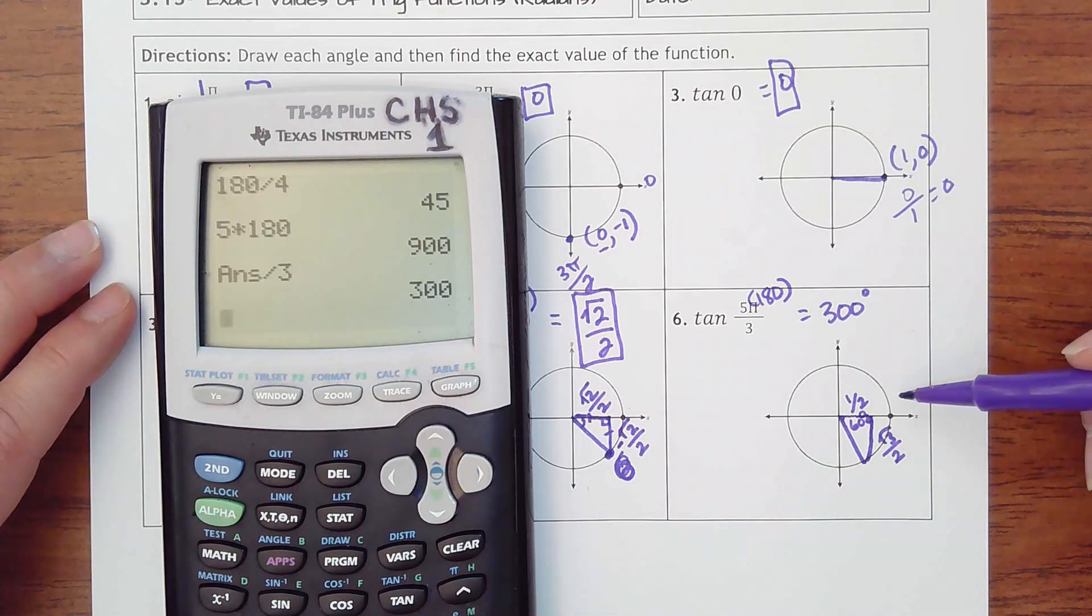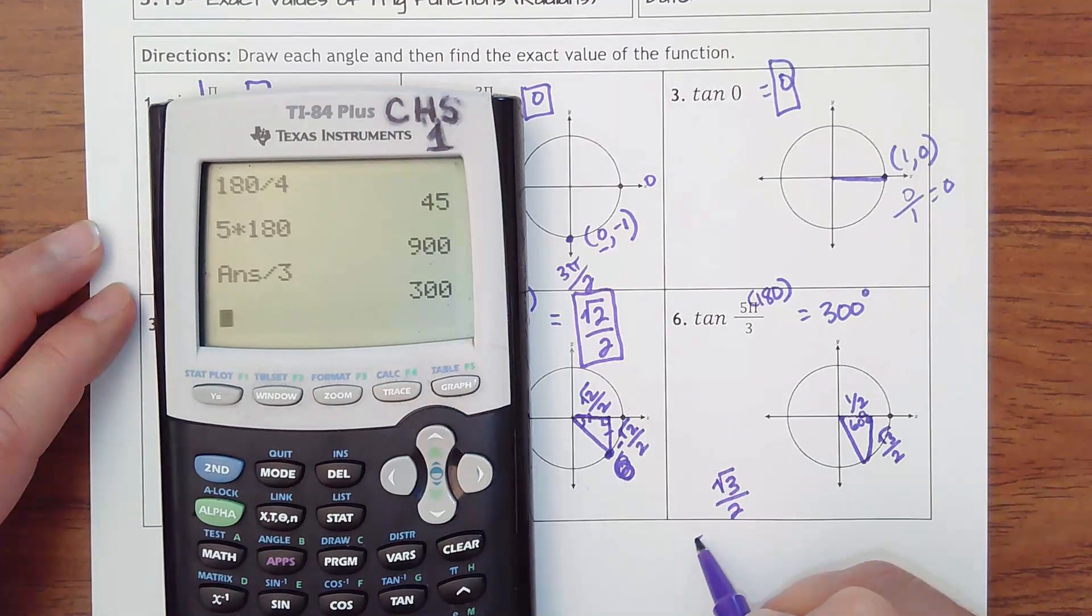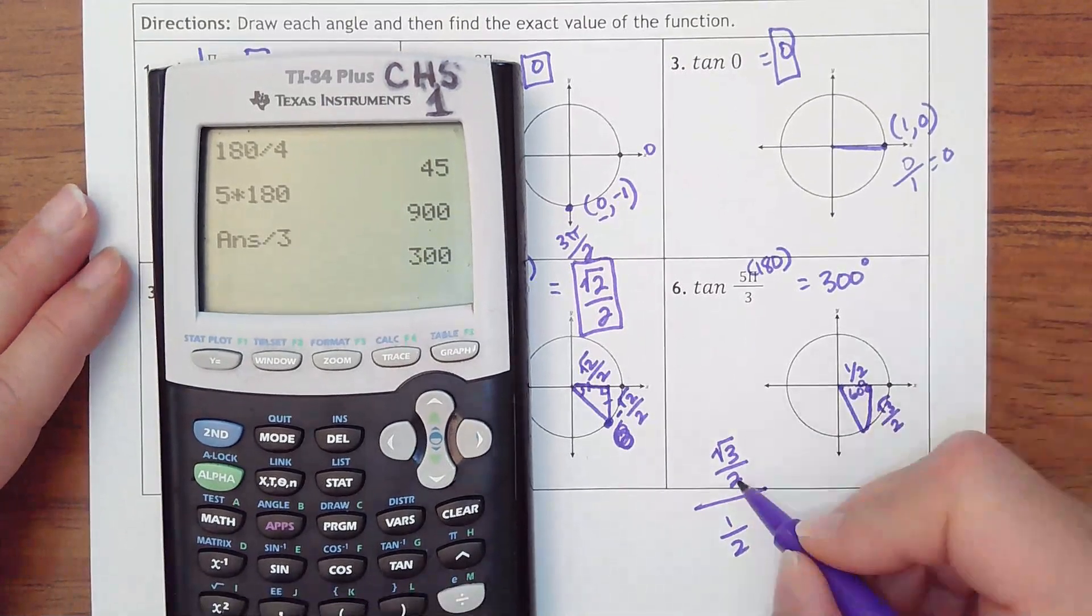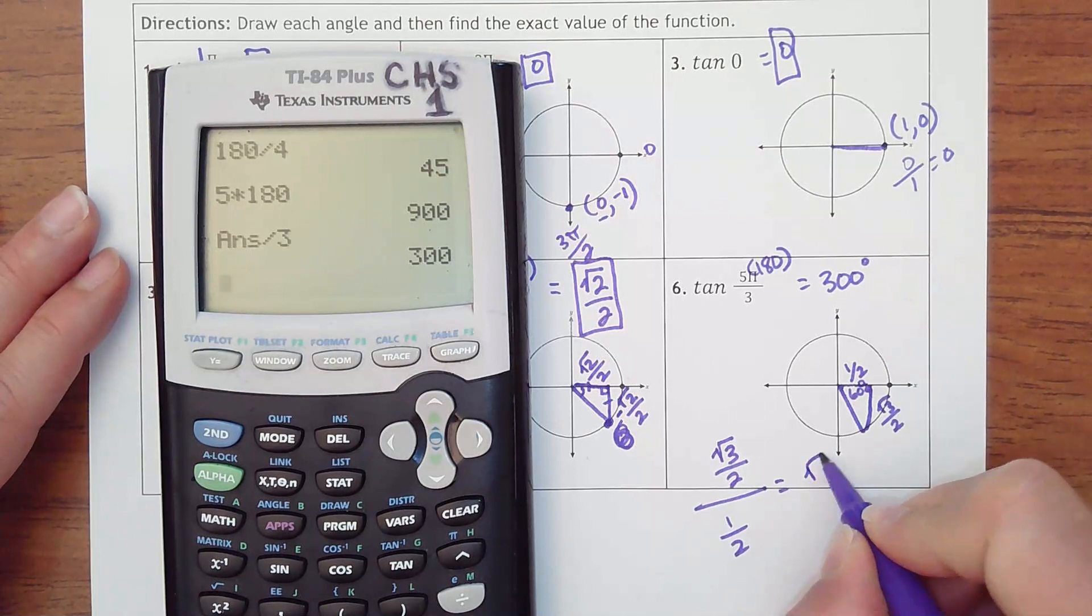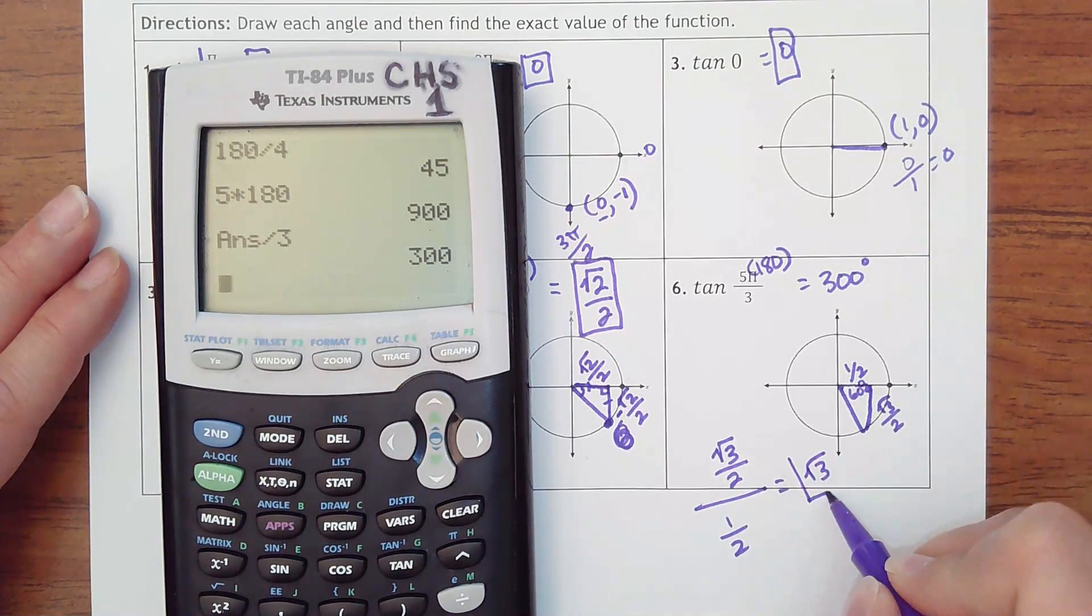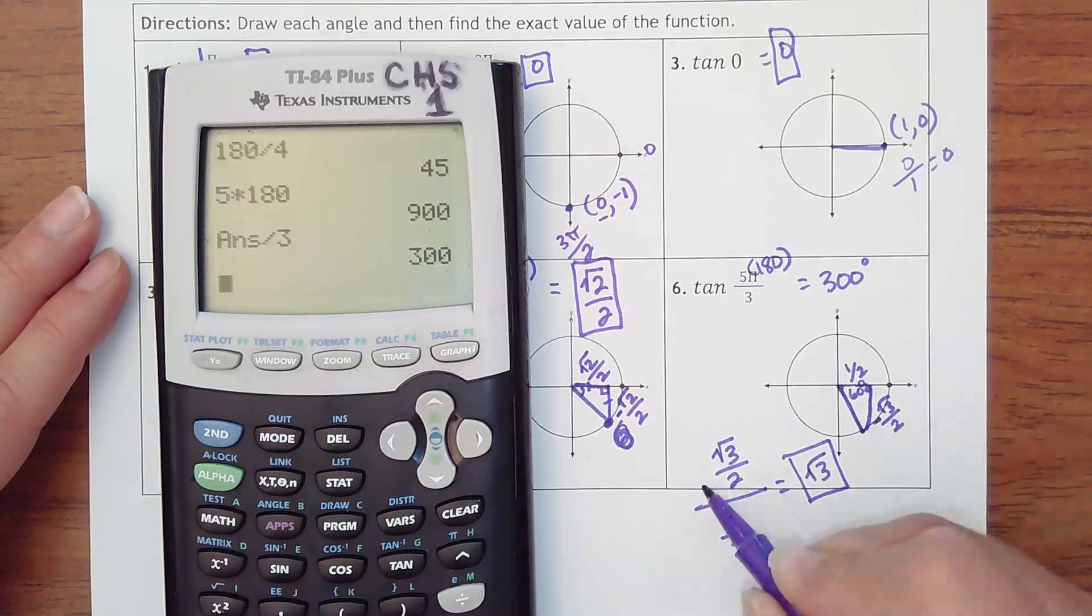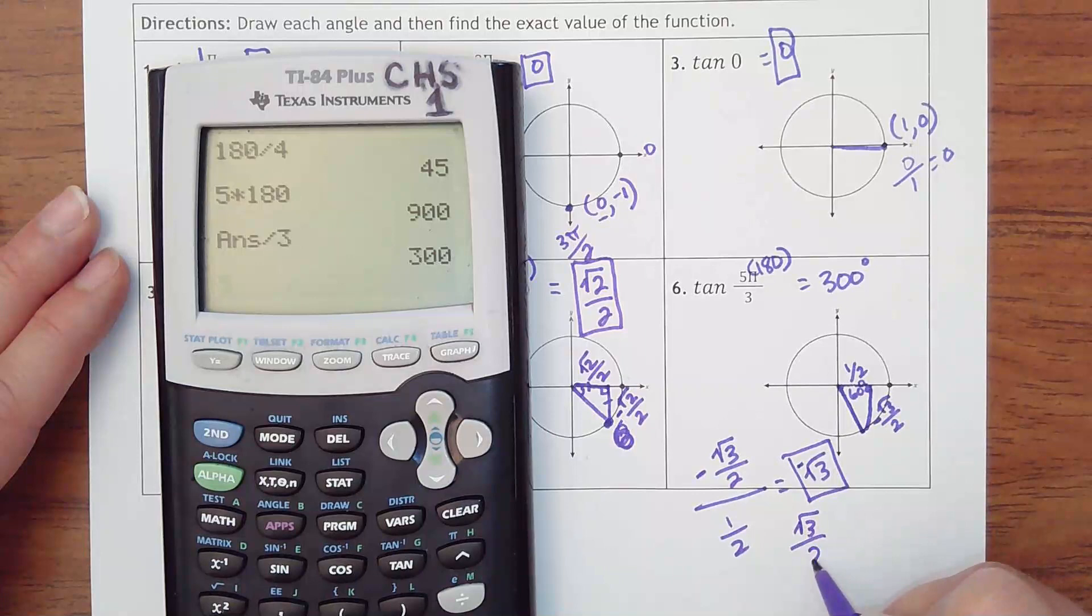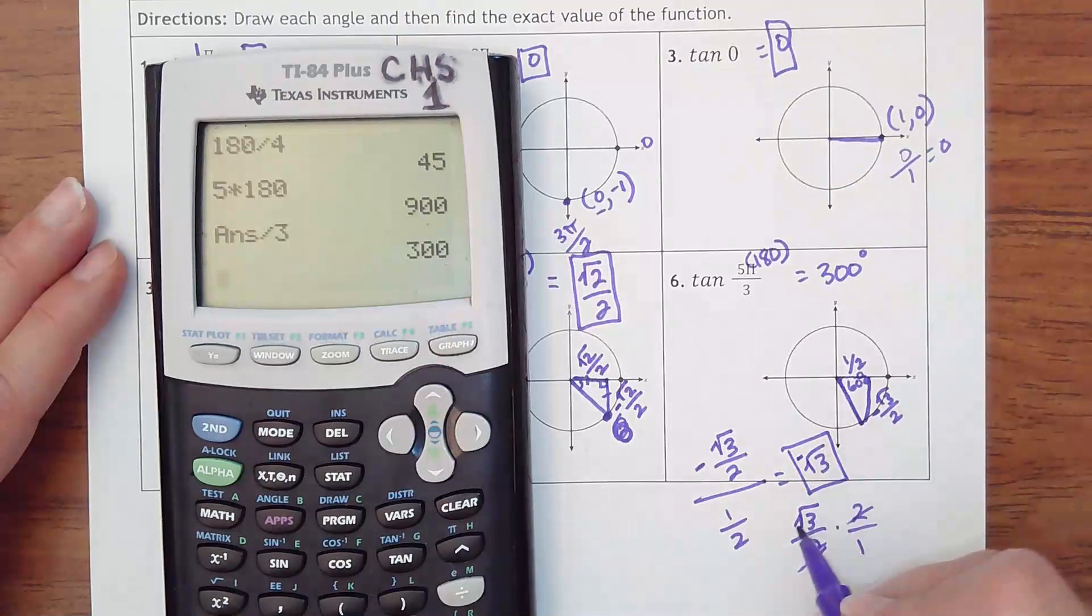Tangent is y divided by x. And really, when you have this, the denominators can cancel out because 2 divided by 2, it's really radical 3. But it would be negative because we're having a negative y divided by a positive x. You could also show that you're multiplying by the reciprocal, and you will see that the 2s cancel out as well.